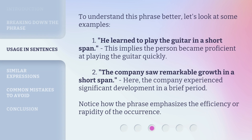To understand this phrase better, let's look at some examples. First: 'He learned to play the guitar in a short span.' This implies the person became proficient at playing the guitar quickly. Second: 'The company saw remarkable growth in a short span.' Here, the company experienced significant development in a brief period. Notice how the phrase emphasizes the efficiency or rapidity of the occurrence.